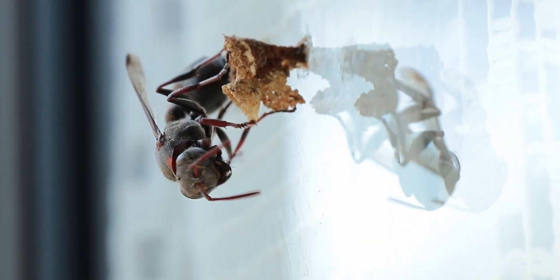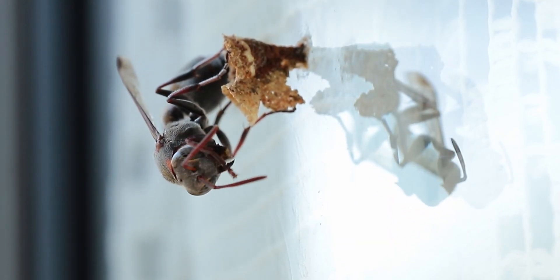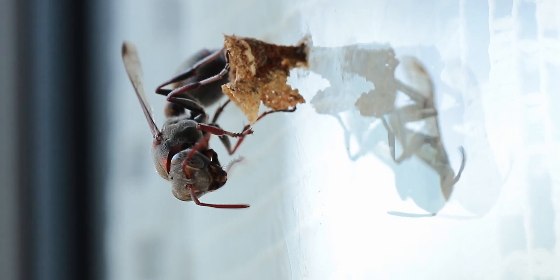To build their paper nests, these wasps chew dead plant material like leaves and twigs which they then mix...